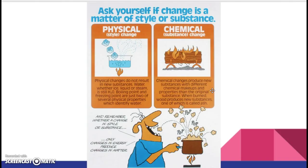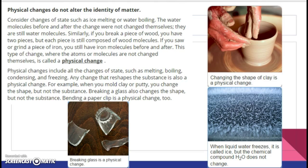When burned, wood produces new substances, one of which is called ash, and of course there's smoke too. Remember, whether a change in style or substance, only changes in energy produce changes in matter. Physical changes do not alter the identity of matter. Consider changes of state such as ice melting or water boiling — the water molecules before and after the changes are still water molecules, still H2O. Similarly, if you break a piece of wood, you have two pieces, but each piece is still composed of wood molecules. If you saw or grind a piece of iron, you still have iron molecules before and after. This type of change, where the atoms or molecules are not changed themselves, is a physical change.